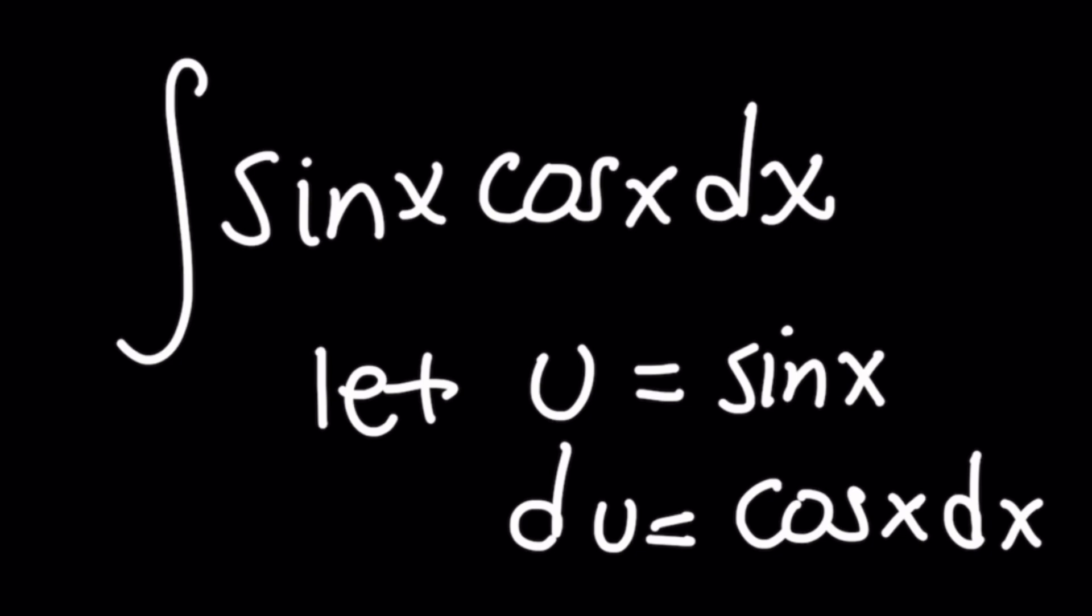And what we do is we simply choose a variable, I'll call it u. And we'll say, oh well, u is going to be sine of x. du, its derivative, will be cosine of x dx. And when we simply substitute everything in, this becomes a simple integration of a polynomial. It's the integral of u du.